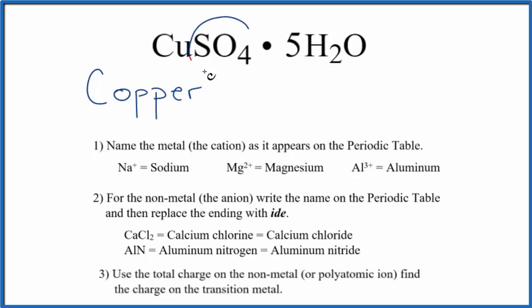Then we have this SO4. This is a polyatomic ion. So you either memorize that SO4 is the sulfate ion or if you're allowed you can look it up. So this group of nonmetals here, we're going to write the name sulfate.